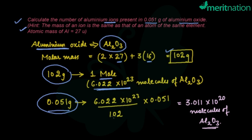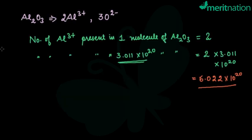That is, this number divided by 102 times 0.051. That will give you the number of molecules of Al₂O₃ that are present in 0.051 grams of aluminum oxide.